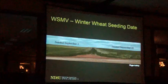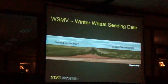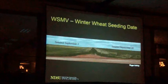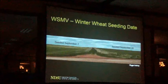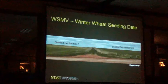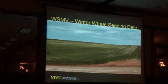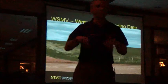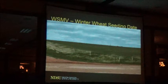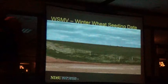Seeding date also comes into play for wheat streak mosaic management. Here are two fields side by side—the only difference is planting date: September 2nd versus September 20th. The September 2nd field shows visible bare spots caused by wheat streak mosaic virus, spreading from a field edge across the field. The later-planted field across the section line shows no virus yet—though that depends on whether mites move and how well they overwinter. Pushing your planting date toward the later end of your comfortable window helps with wheat streak mosaic management.